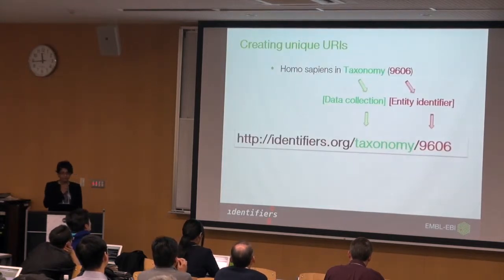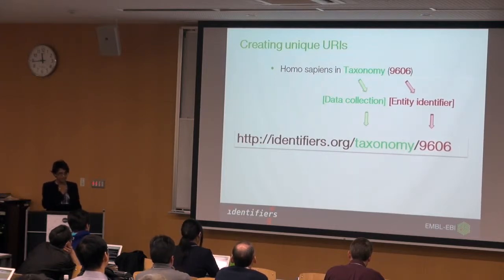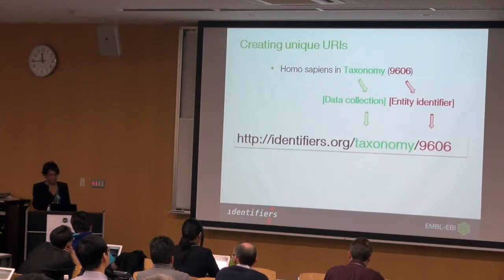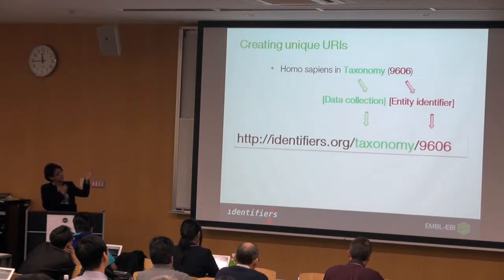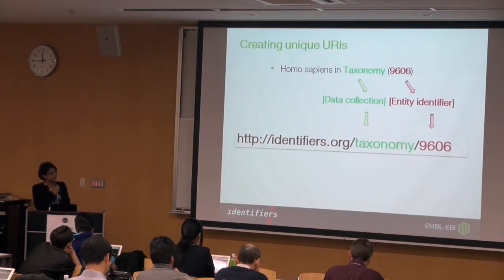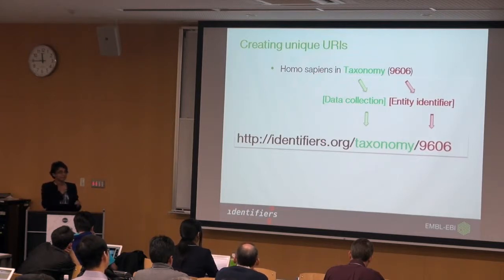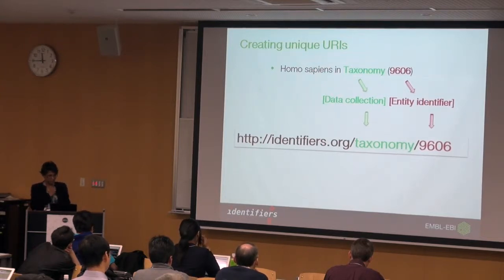So how do we create these unique URIs? Take the example of Homo sapiens in Taxonomy 9606. 'Taxonomy' is the data collection and 9606 is the entity identifier. We have a namespace — in this case 'taxonomy' — and it's identifiers.org/taxonomy/9606. The identifier comes from the database but we don't generate it. We have the identifier pattern in our registry and when you request it, it can redirect to the identifier.